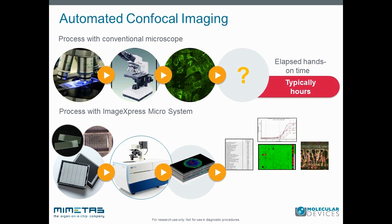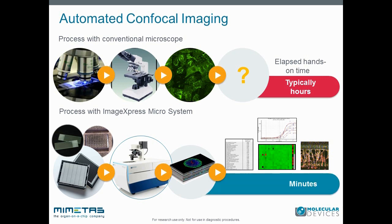Once numbers are generated for the parameters of interest, responsive cells or wells can be identified, statistically analyzed, plotted and conclusions drawn. Since all images and measurements are stored together in a database, the burden of keeping the data organized is removed from the scientist and the results can be shared within a networked company or organization. The hands-on time is dramatically shortened due to the automated and seamless integration of acquisition, analysis, and viewing of results.